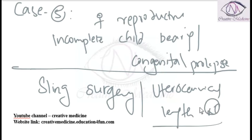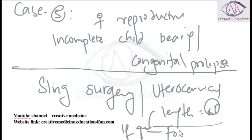However, if the female is of reproductive age group with incomplete childbearing but her utero-cervical length is increased, then we do Fothergill's repair. If utero-cervical length is increased, we perform Fothergill's repair.